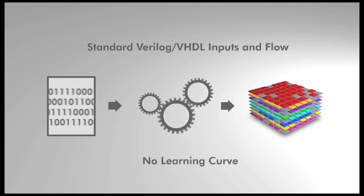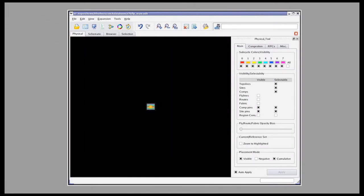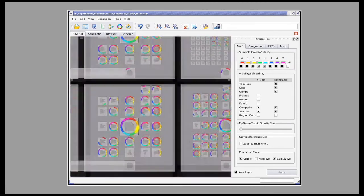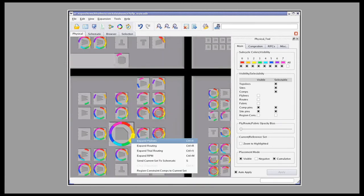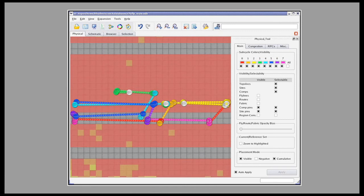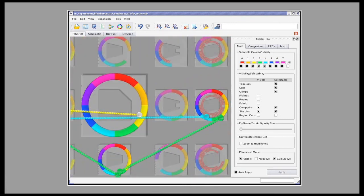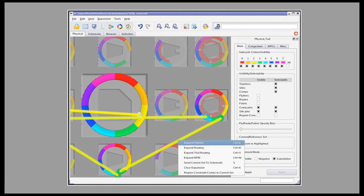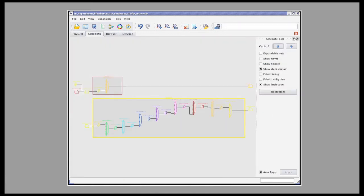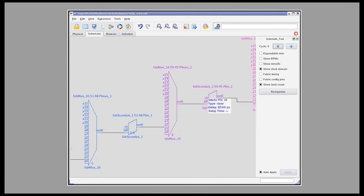The Spacetime design compiler automatically maps, places, and routes a user design into this virtual 3D device using standard VHDL or Verilog design inputs and flows. It also automatically manages all control of the hardware reconfiguration, thereby freeing the designer of the complexities associated with this virtual 3D structure.